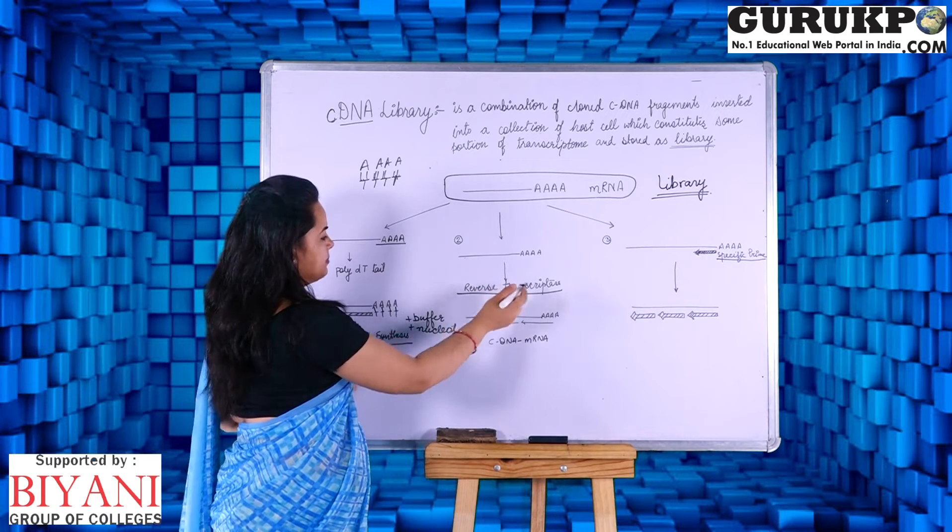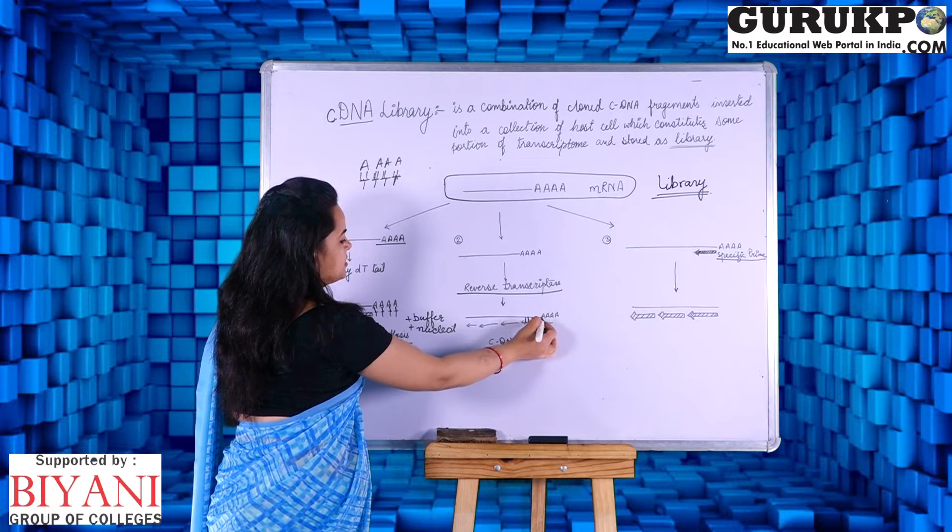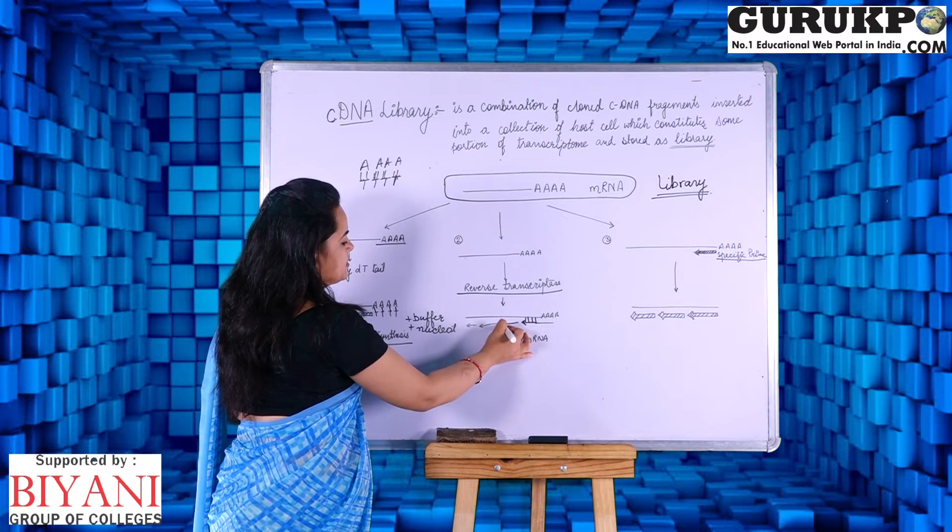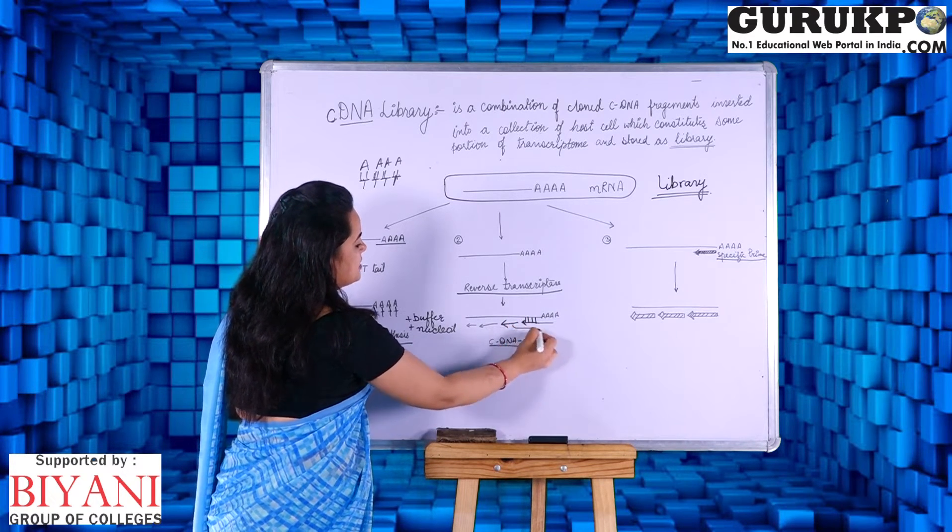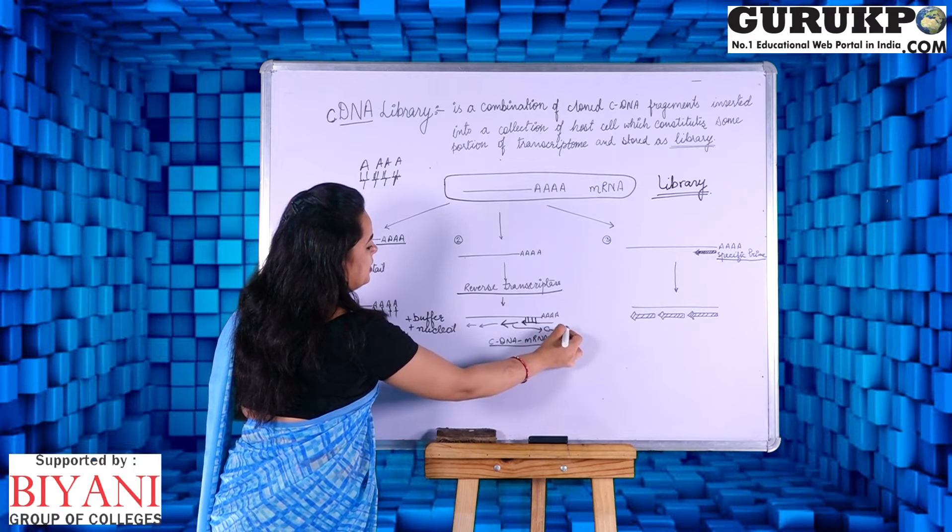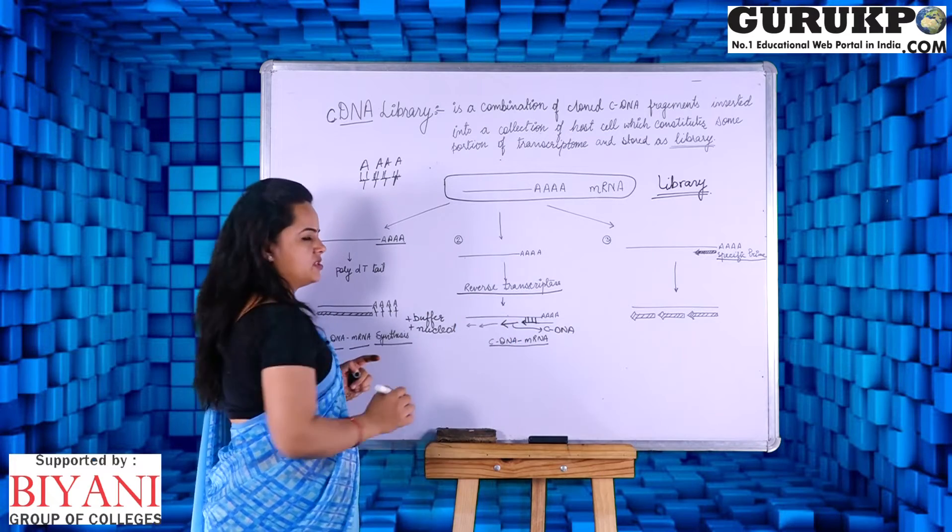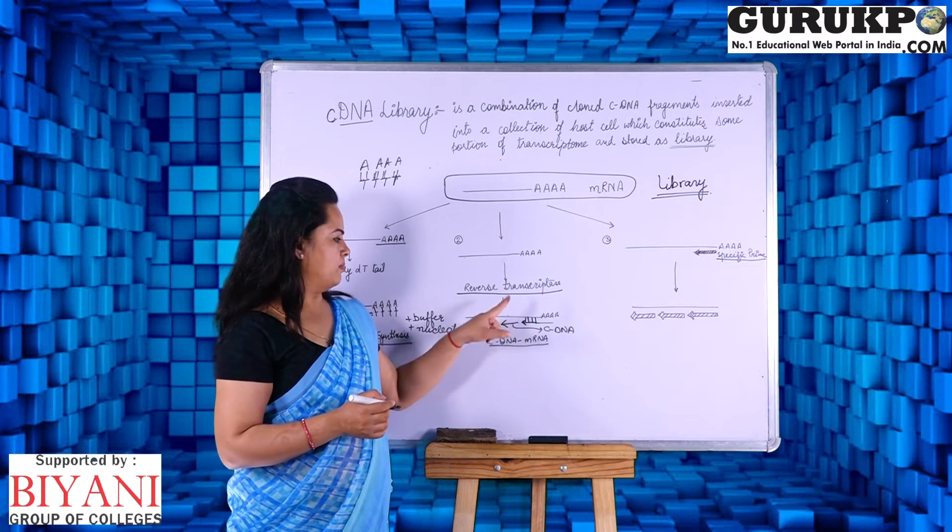In the second method, we just use a reverse transcriptase enzyme. This enzyme will place the complementary strand of the messenger RNA and this strand will be synthesized. This strand which is known as cDNA-messenger RNA, this is the complementary DNA because it has been synthesized to be complementary to the messenger RNA. So it is known as complementary DNA-messenger RNA complex.